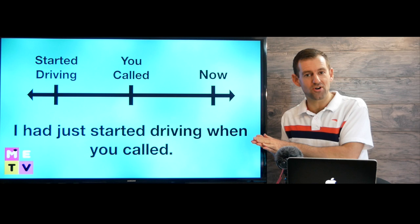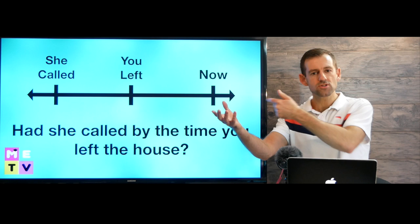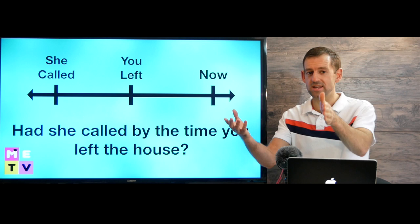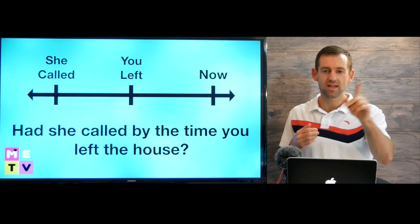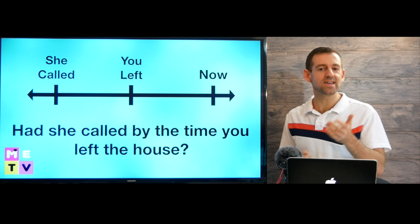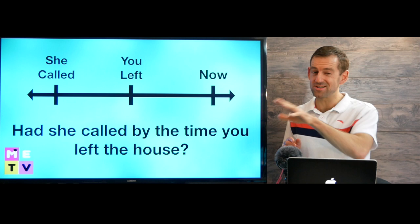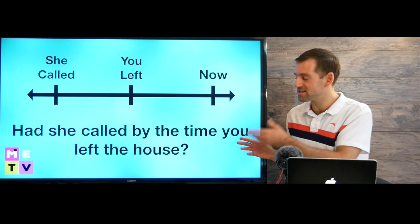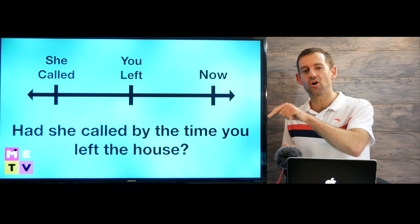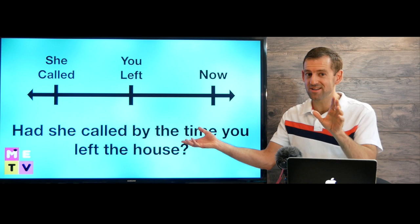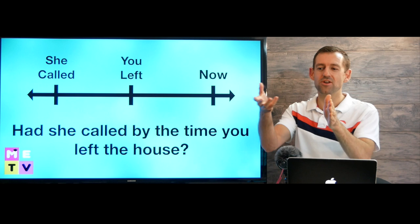Let's say we have a friend named Sarah, and she told me she was going to call you at nine o'clock. But I tell her that you leave the house at nine to go to work. Later I see you and ask: 'Did Sarah call you?' You say yes. I ask: 'Had she called by the time you left the house?' Because I told her you leave at nine — if she couldn't reach you, it's because you had already left. You might answer: 'No, she hadn't. I had already left the house, so she called me at work.' I wanted to know if she called before you left.